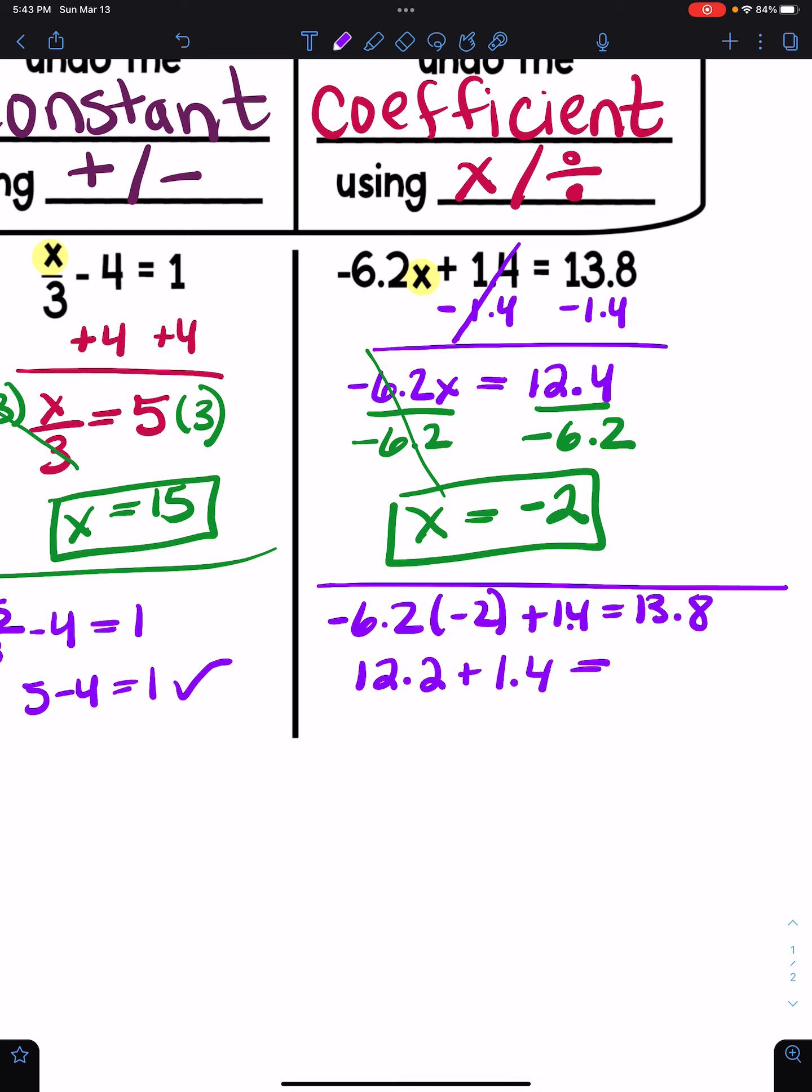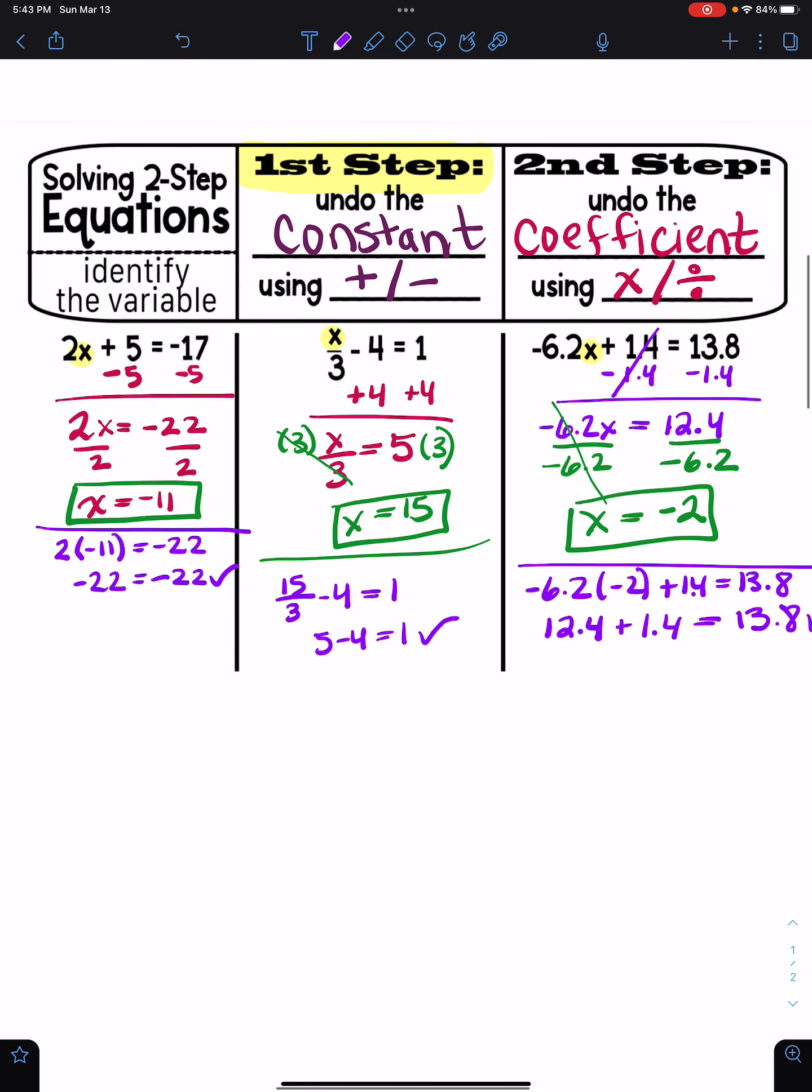So it's a positive 12.2 because we have a negative times a negative, which is always positive. And then 12.2 plus 1.4 is in fact, what did I do wrong? Oh, I know what I did wrong. See, this is why we check. We're going to get 12.4 there. Now it's 13.8. So yes, it worked. All right, guys. Thanks for watching.